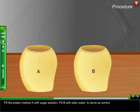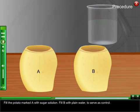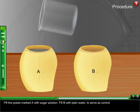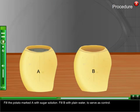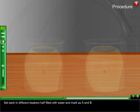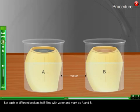Fill the potato marked A with sugar solution. Fill B with plain water to serve as control. Set each in different beakers half filled with water and mark as A and B.